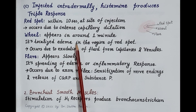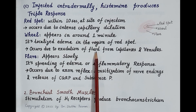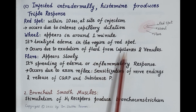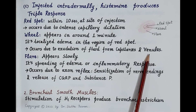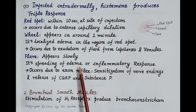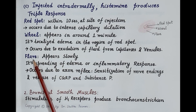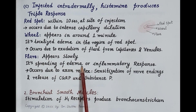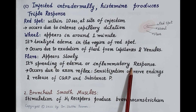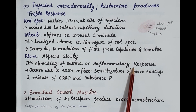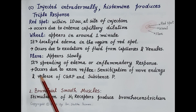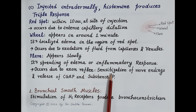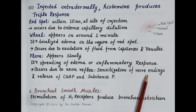The wheal occurs due to passage or exudation of plasma fluid from the capillaries and venules into the tissues. This is followed by the slow appearance of the flare — the spreading of edema or the inflammatory response over a wider area.